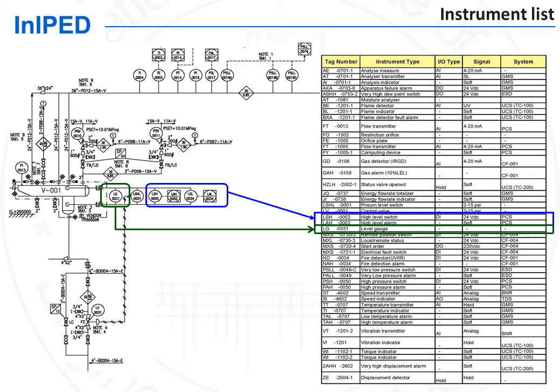Once the instrument list has been produced, each field instrument must be specified. A data sheet is produced to this end. A process data sheet has already been issued for some instruments, such as control valves, pressure safety relief valves, and flow instruments. For the other instruments, the process information is available on the heat and mass balance.